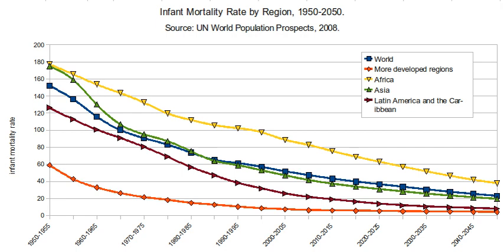It is now a target in the Sustainable Development Goals for goal number 3: ensure healthy lives and promote well-being for all at all ages. Throughout the world, infant mortality rate fluctuates drastically, and according to biotechnology and health sciences, education and life expectancy in the country is the leading indicator of IMR. This study was conducted across 135 countries over 11 years, with Africa having the highest infant mortality rate of any region studied, at 68 deaths per 1,000 live births.